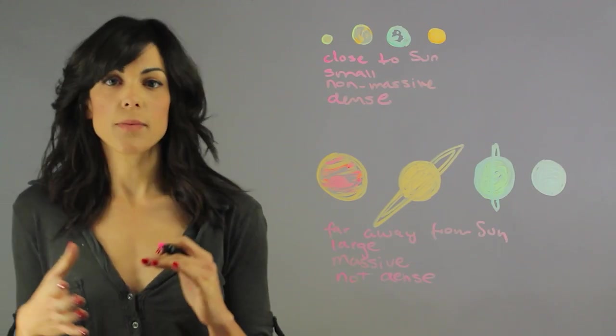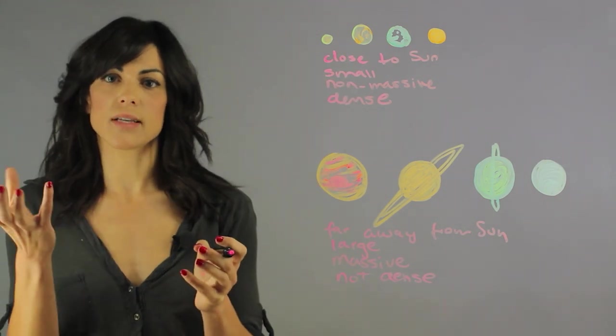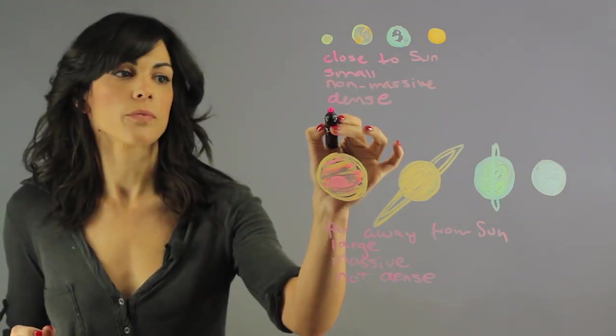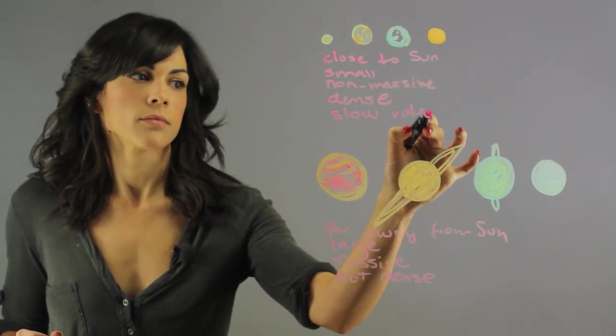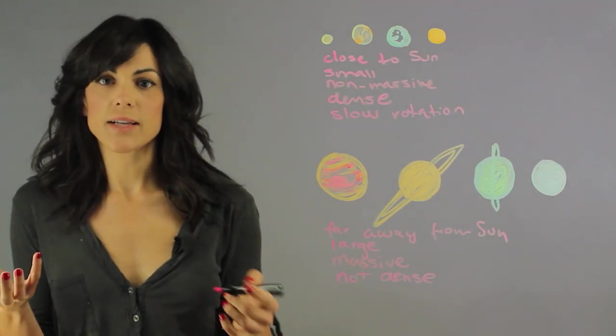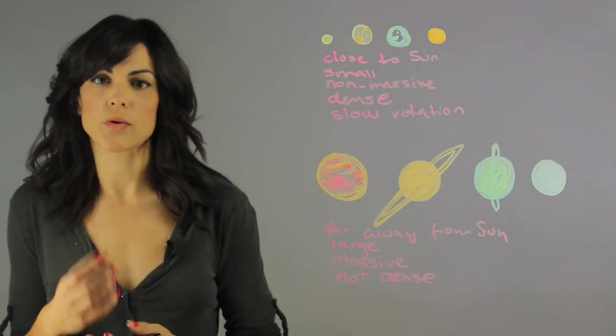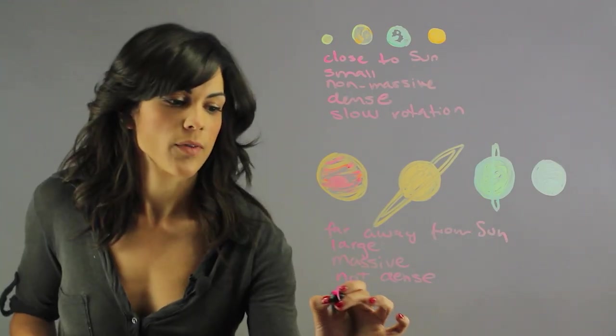And now let's talk about the rotation. The rotation of these planets is slow. Since it's solid, it takes the whole body to move. Now the gas giants, because they're gases, they have differential rotations all over their bodies, and they can rotate a lot faster along its axis. So fast rotators.